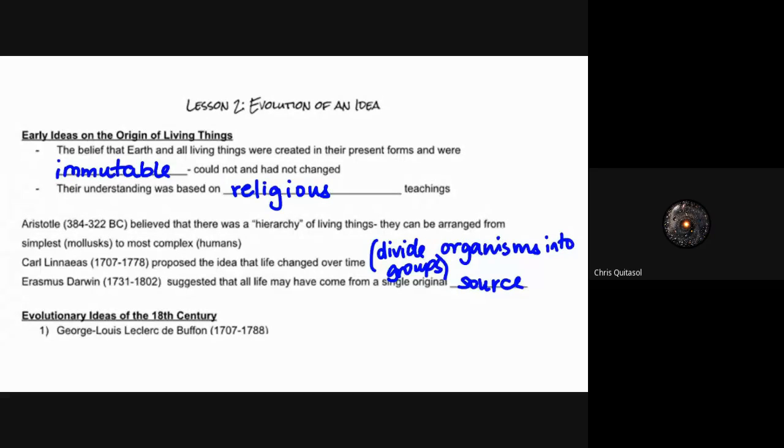Okay, welcome to lesson two: Evolution of an Idea. We're going to look at the different theories that revolved around evolution as a whole, how they kind of piggybacked on each other, and how they were used to develop the general idea of evolution by Charles Darwin. We won't get into Darwin's specifics until a little bit later.